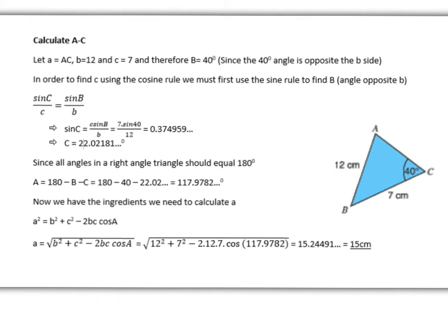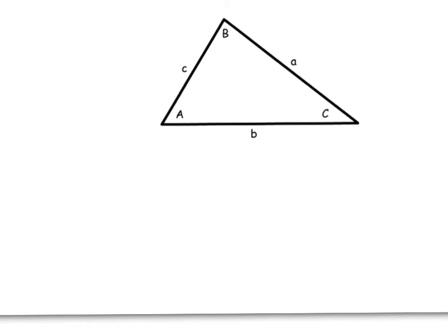I said earlier I was going to show you some derivations - how the sine and cosine rules are actually derived. Let's do that now. First, the cosine rule. We're going to draw a line here that splits up B and divides it into two right angle triangles.